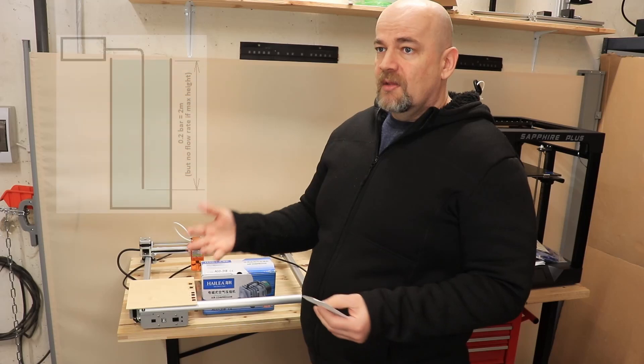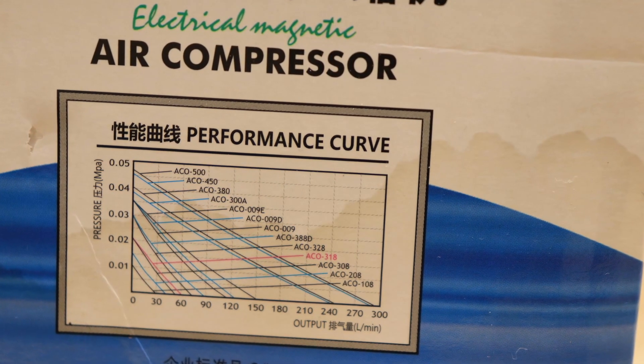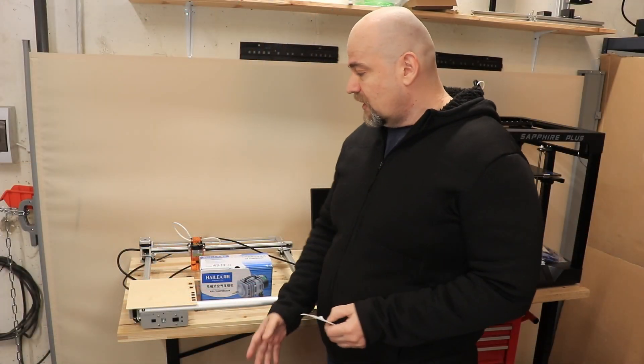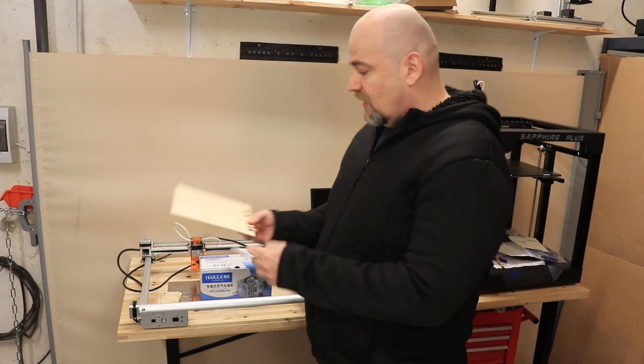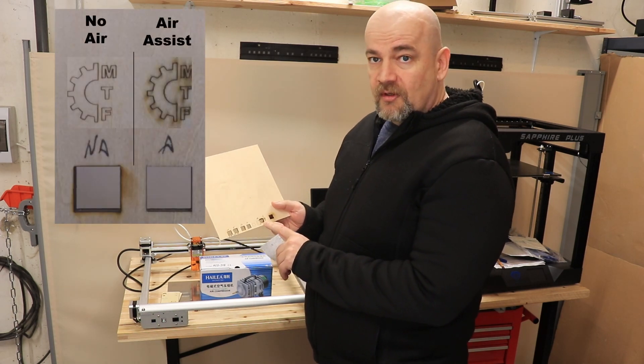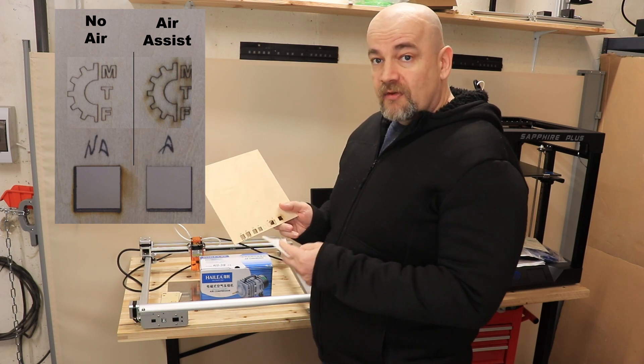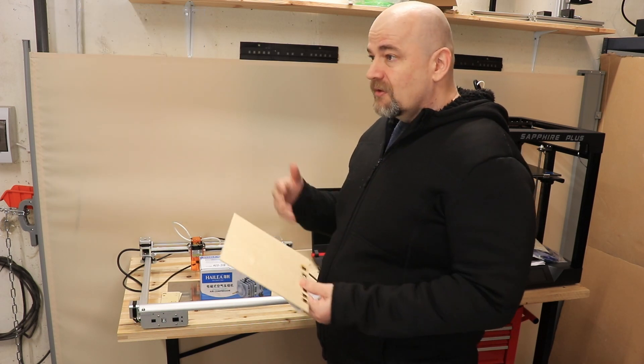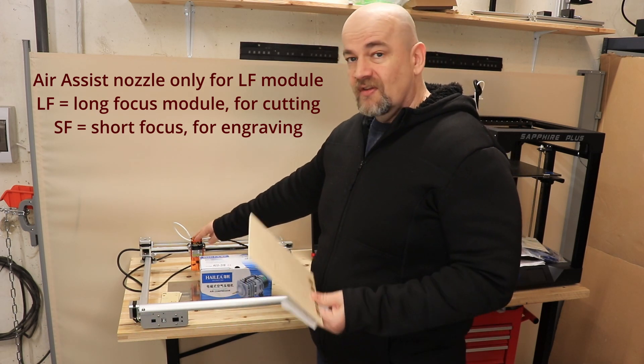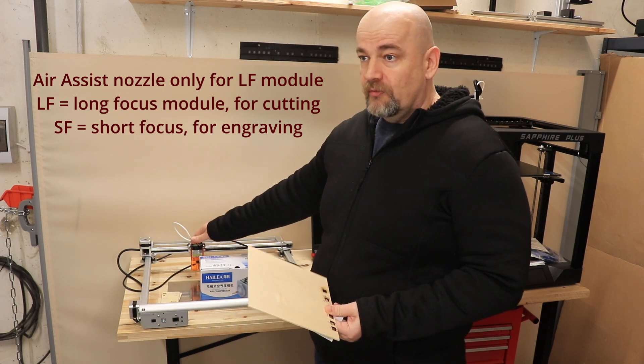With the vacuum cleaner I got very interesting results. Actually, for engraving it didn't improve, it was even worse for the plywood. But the cutting was much better. Maybe that's not coincidence that it arrives only with the long focus module, which is designed for cutting and not for the short focus module which is better for engraving.